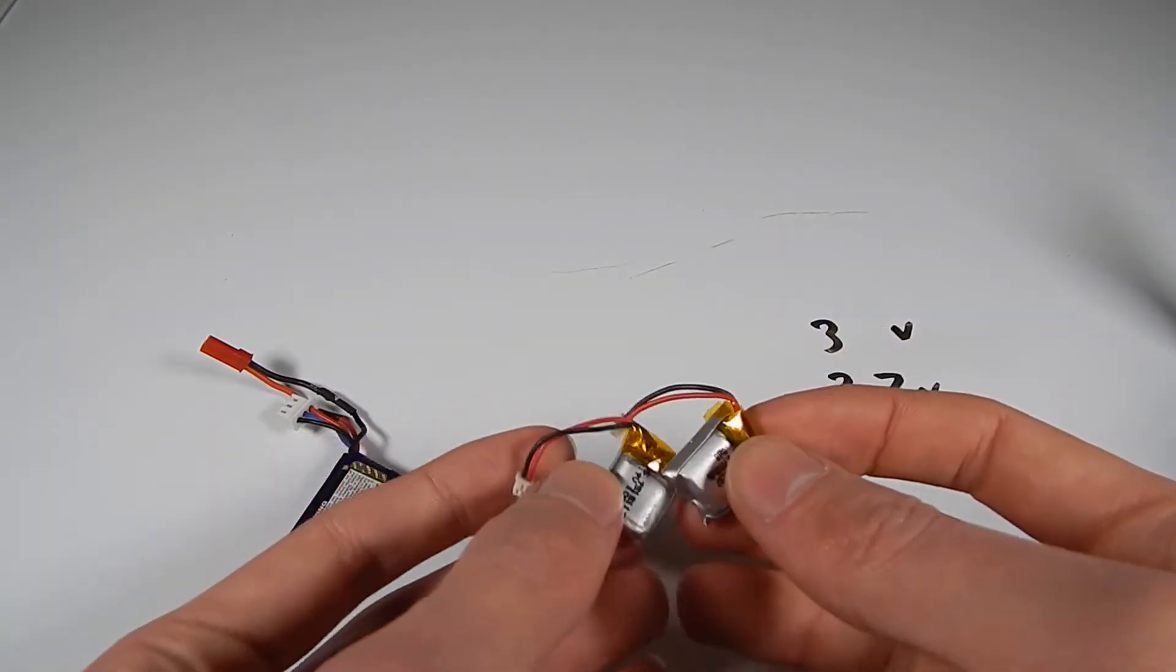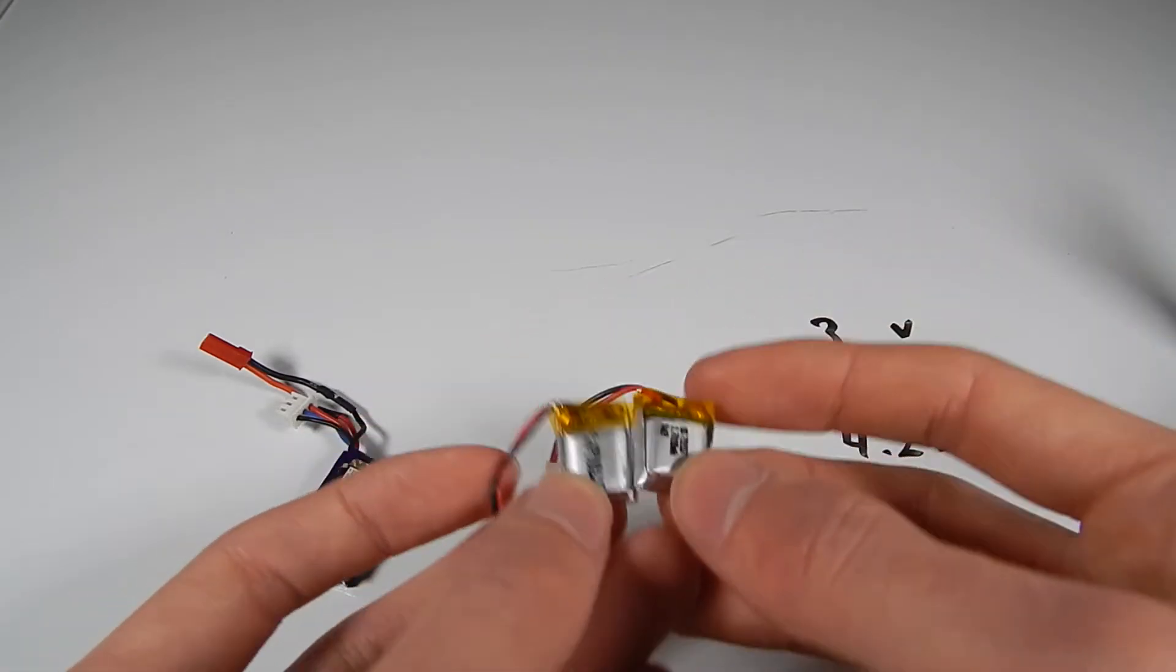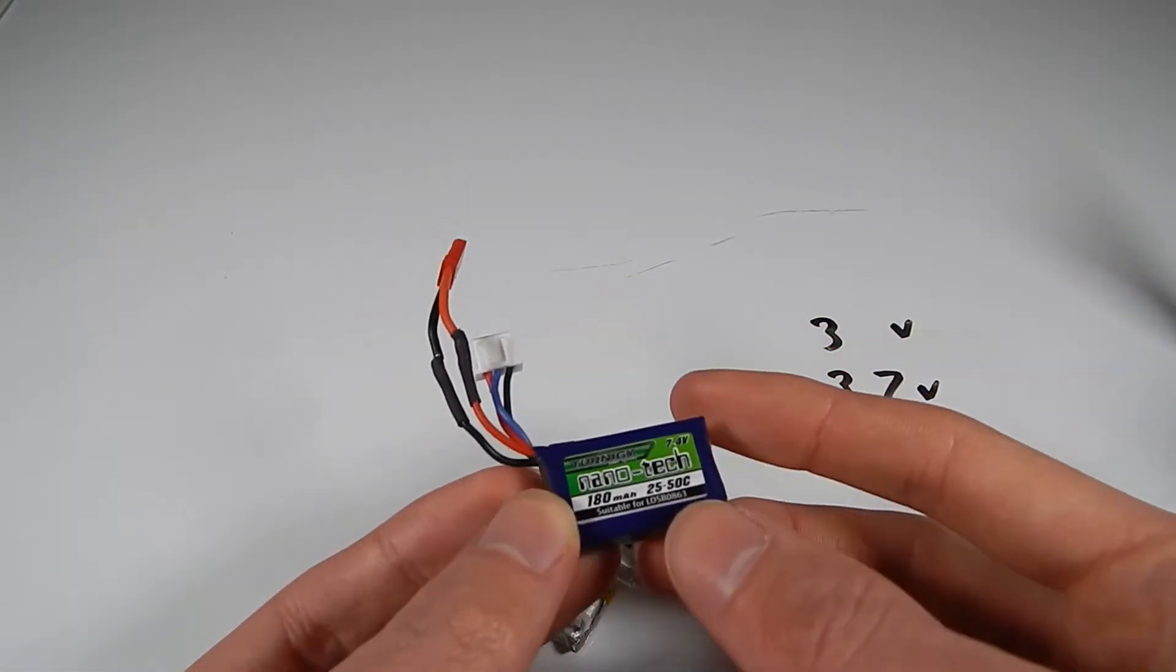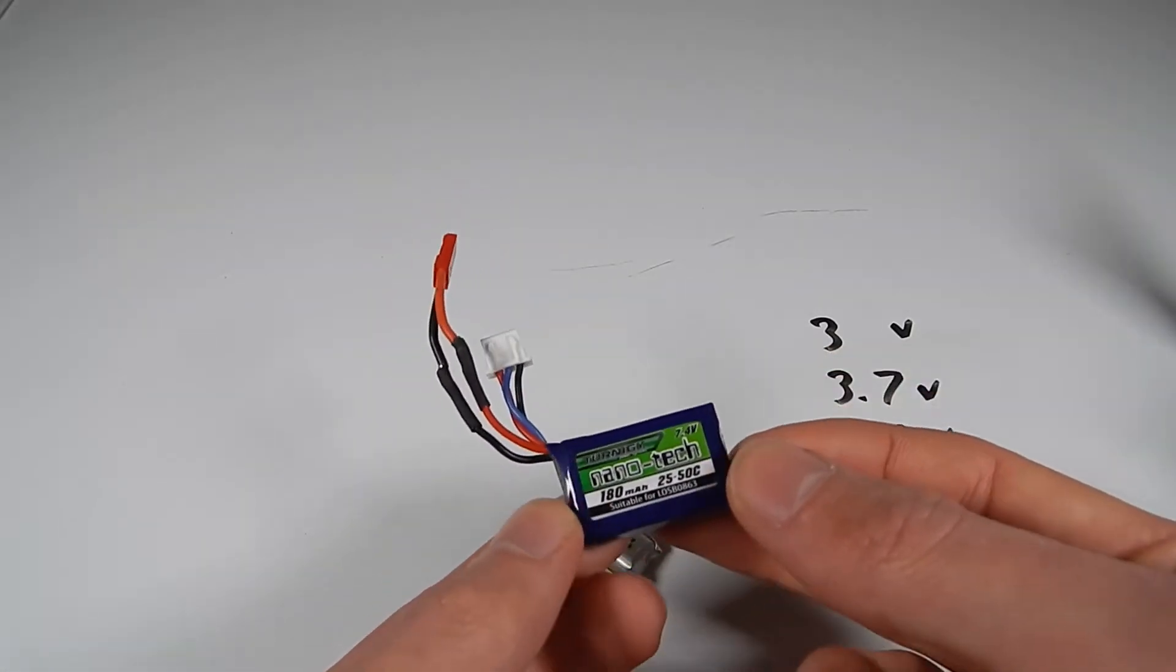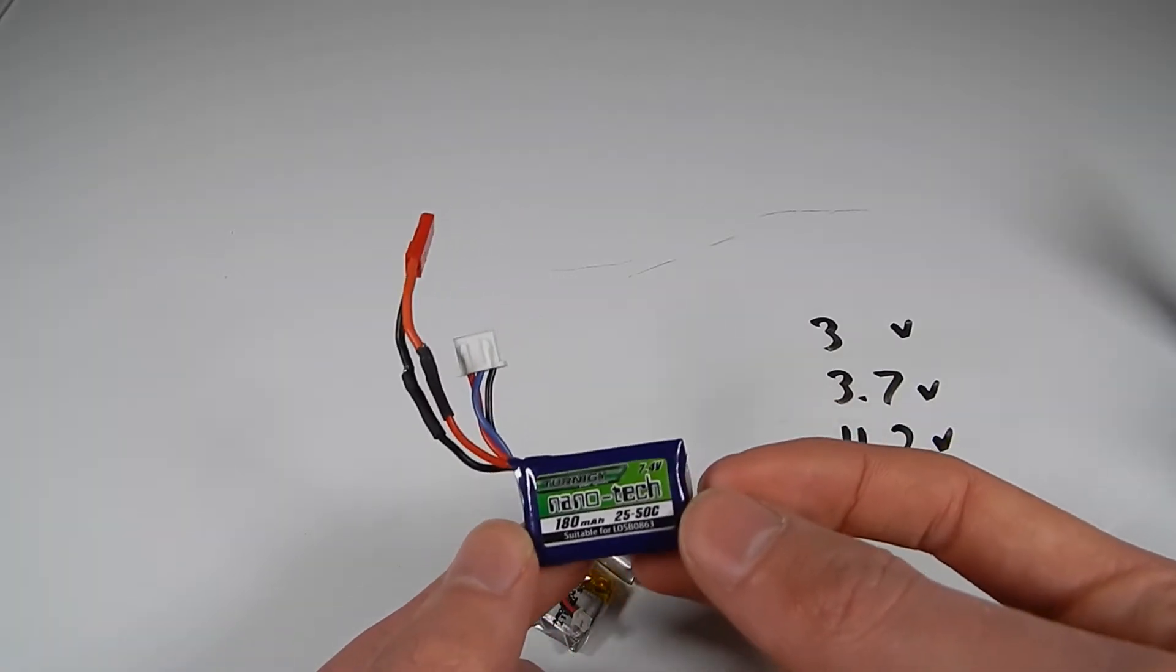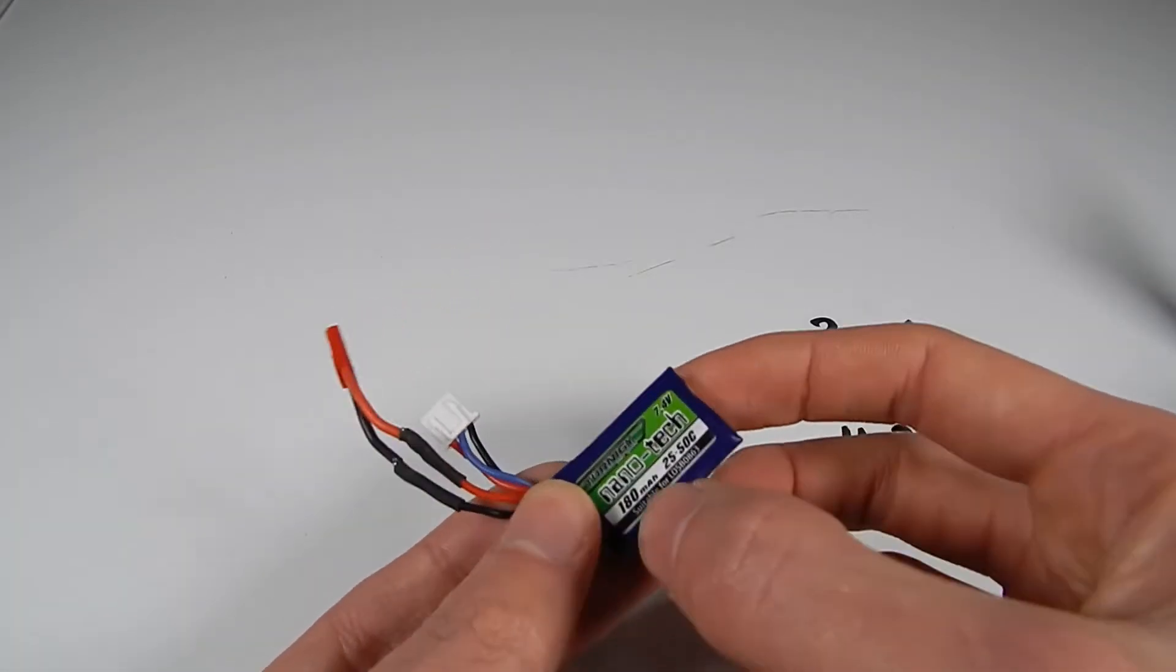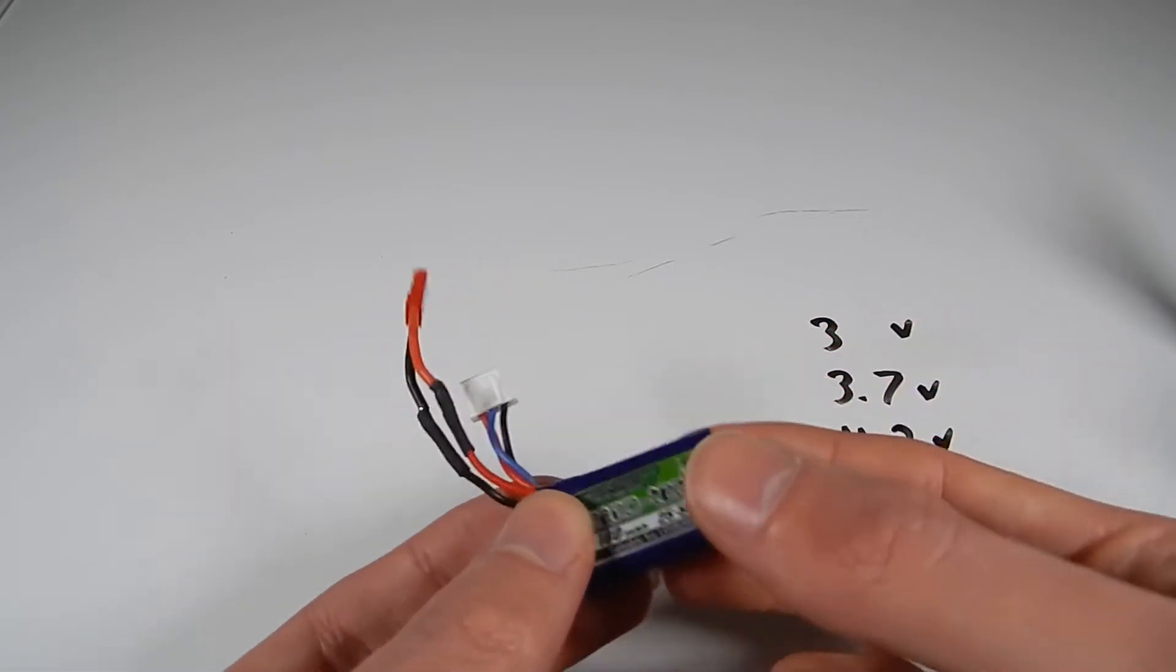Before we get into this I just want to have a quick talk about what these are and why I'm doing this. This is a 180 mAh 2S LiPo battery that I have been using in some of my ant weight combat robots. This is actually a little bit too big, especially if you're running a weaponless robot. It's too big capacity wise, which means it's also too big size and weight wise.